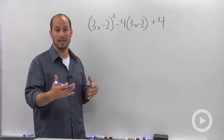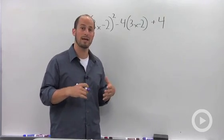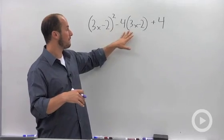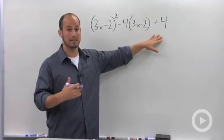But I want to show you a little bit of a shortcut that we can do in order to deal with this. What we have is something squared minus something else times something plus 4.